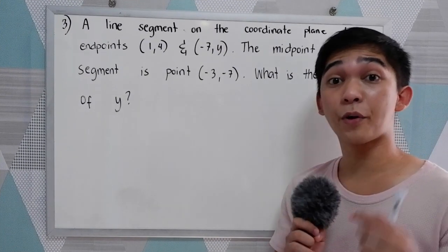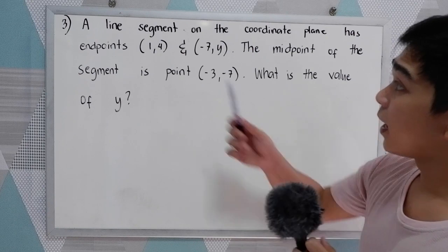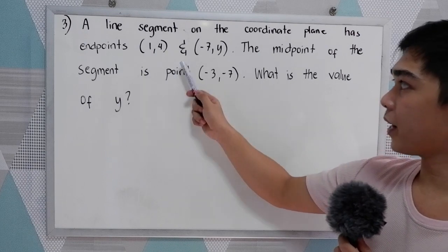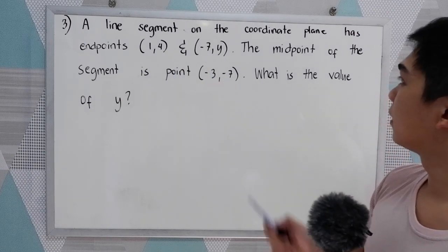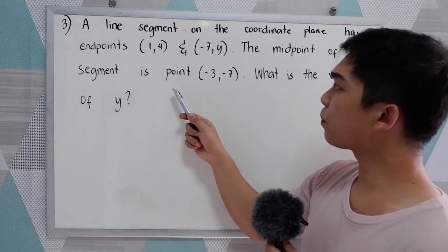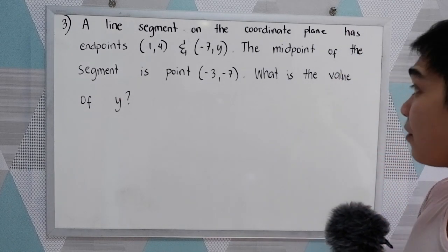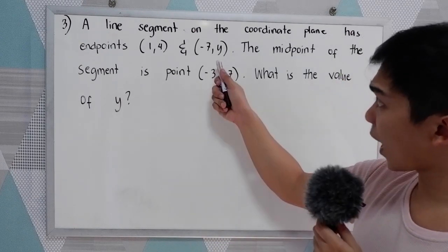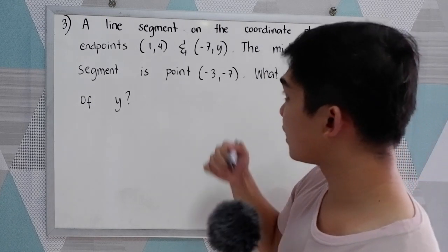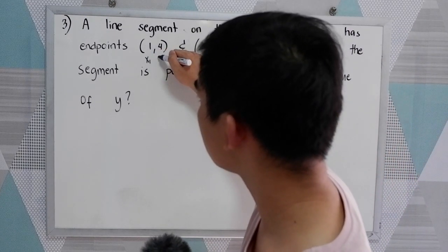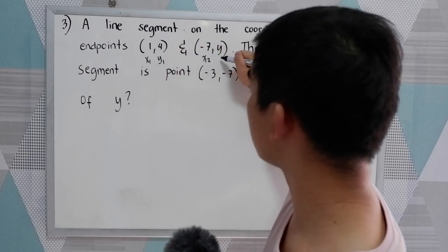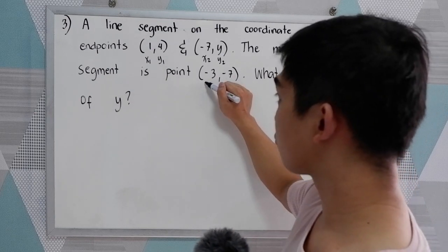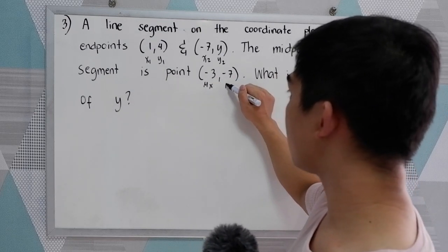Now our problem number 3. A line segment on the coordinate plane has endpoints 1, 4 and negative 7, y. The midpoint of the segment is the point negative 3, negative 7. What is the value of y? So we are going to find the value of y. First, let us lay down our given: this is x sub 1, y sub 1, x sub 2, and y sub 2. And this is our midpoint for x and midpoint for y.